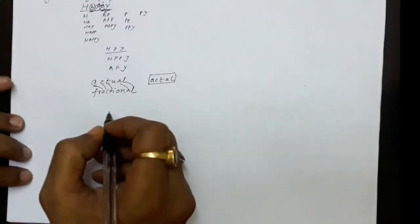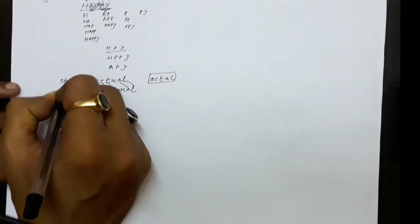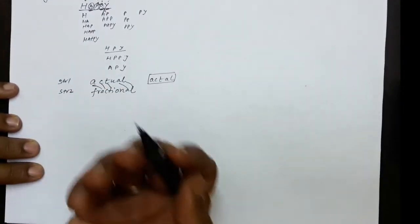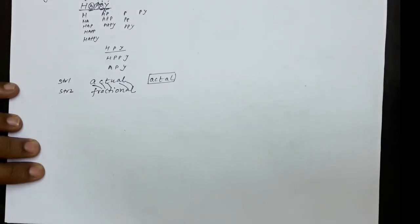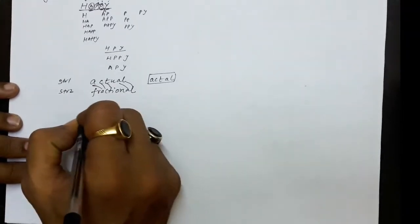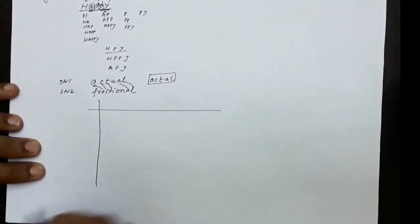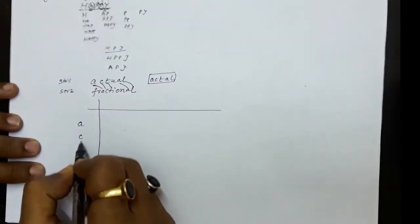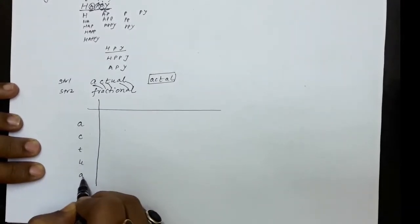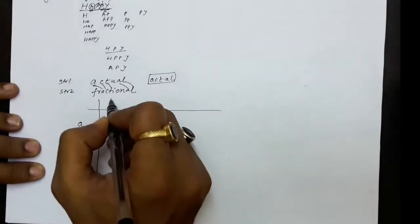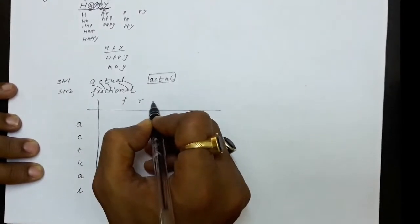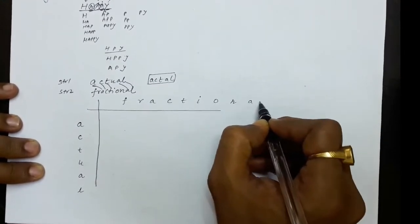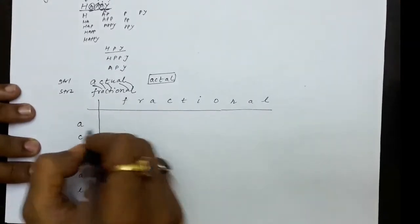It will be of a matrix type. We can take string number one on the row side and string number two on the column side. The first string has characters a, c, t, u, a, l. The second string has characters f, r, a, c, t, i, o, n, a, l. We are considering that there is a space as a first character in both strings.